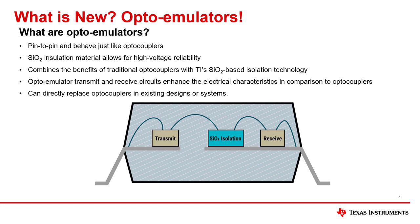which is TI's modern isolation barrier technology. Using TI's SiO2 technology for optoemulators between the transmit and receive die allows for the enhancement of high-voltage reliability, device longevity, and better electrical characteristics.